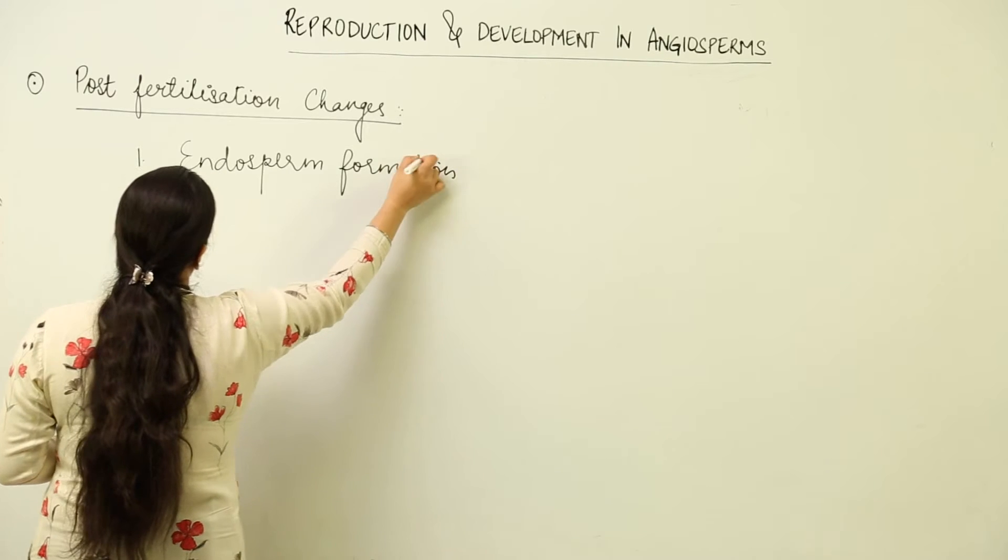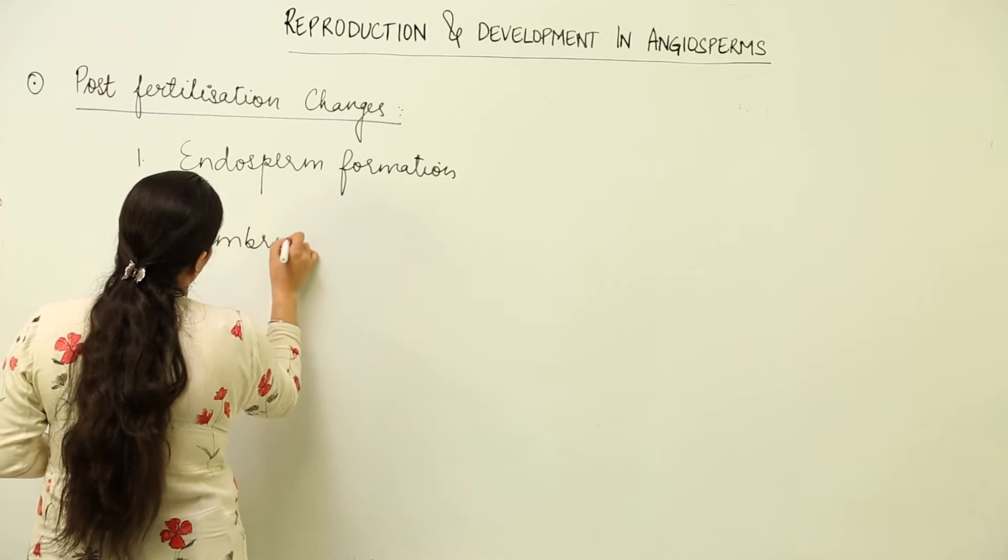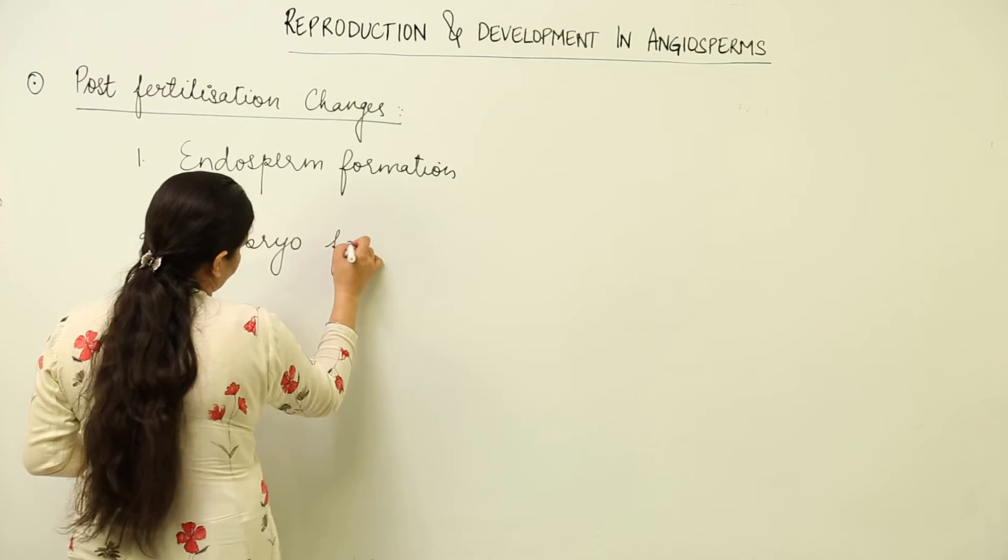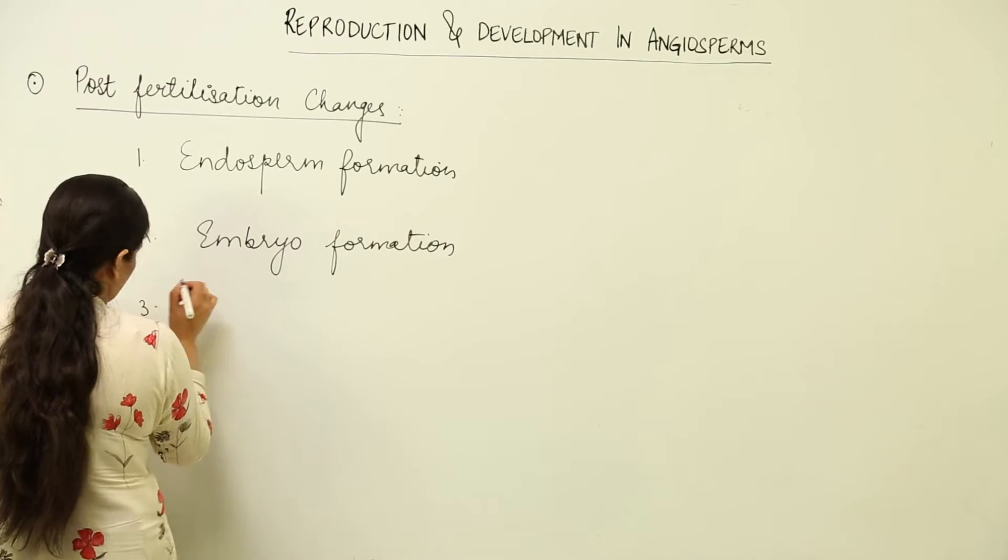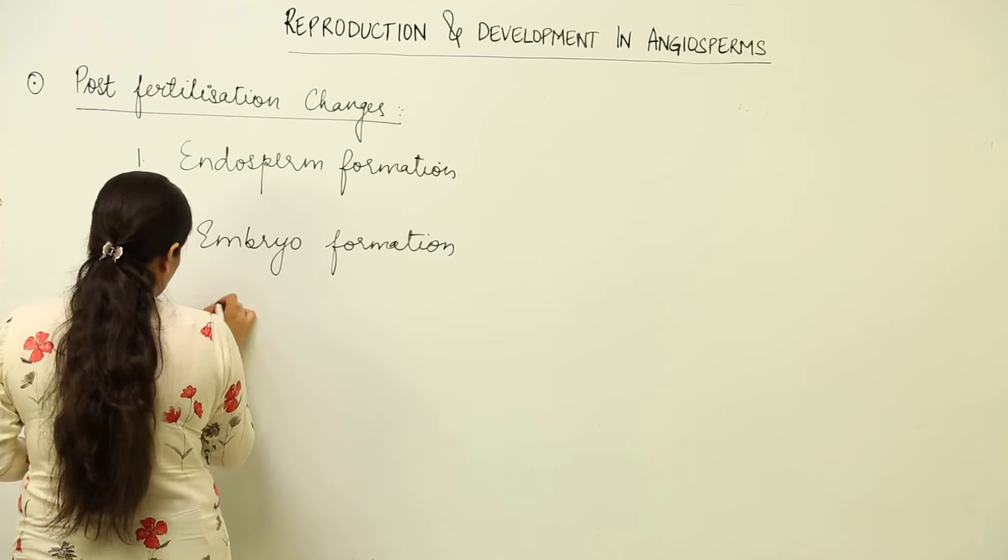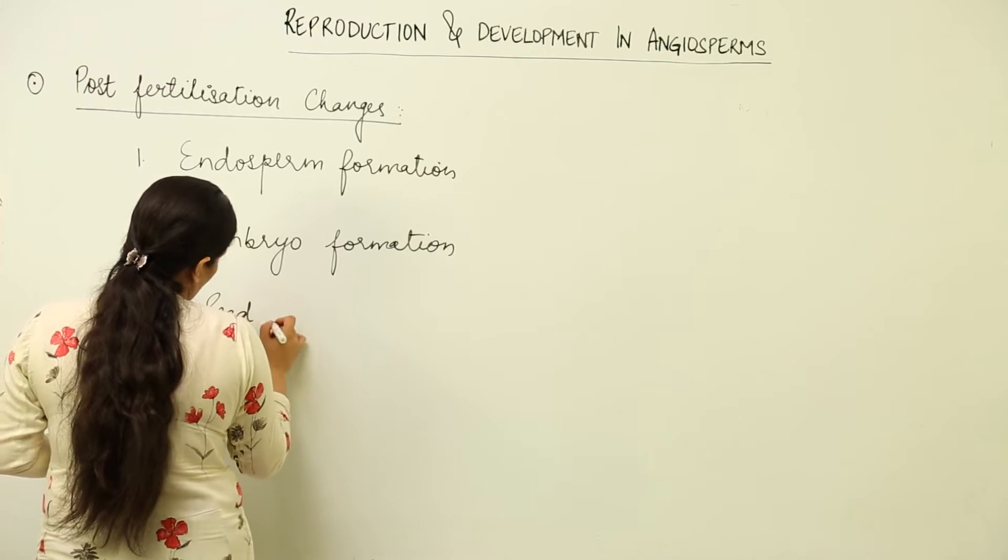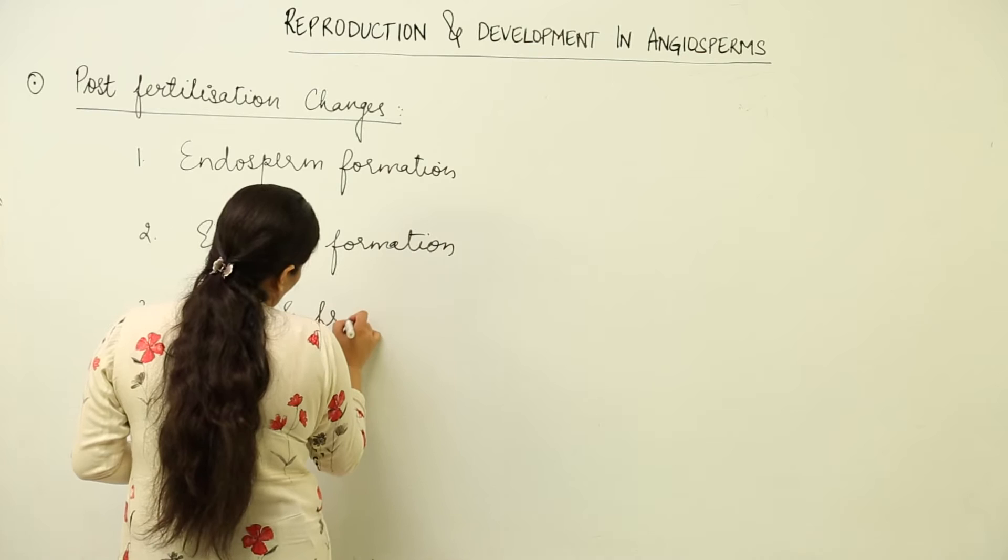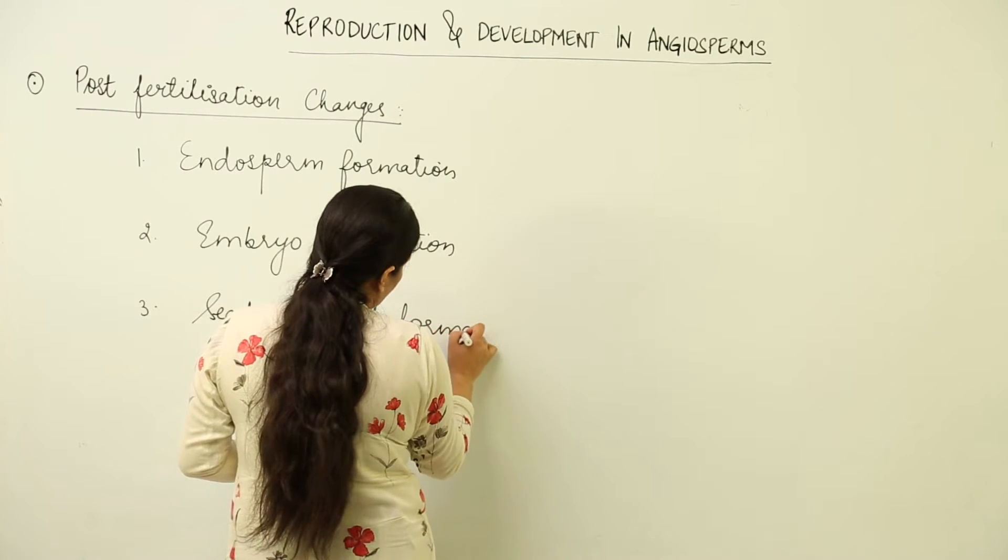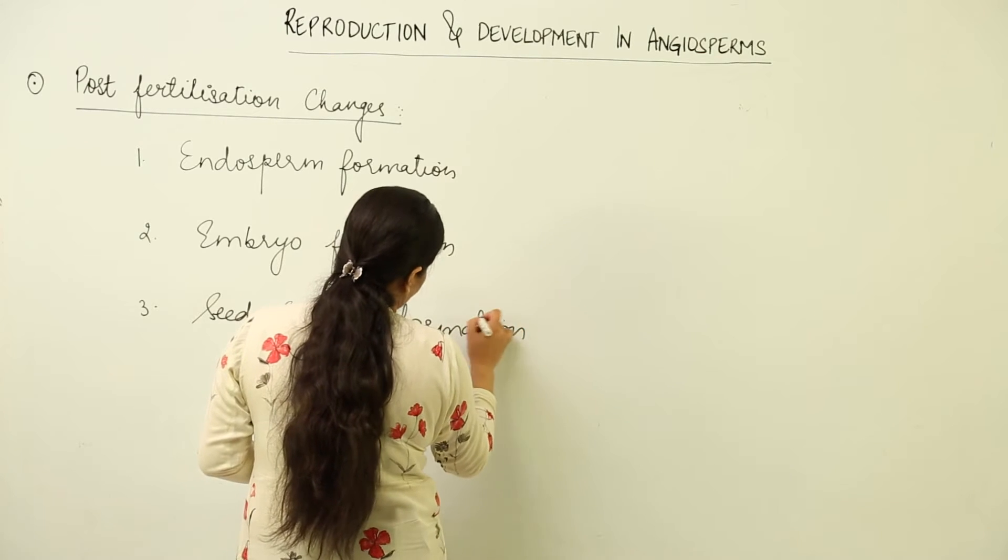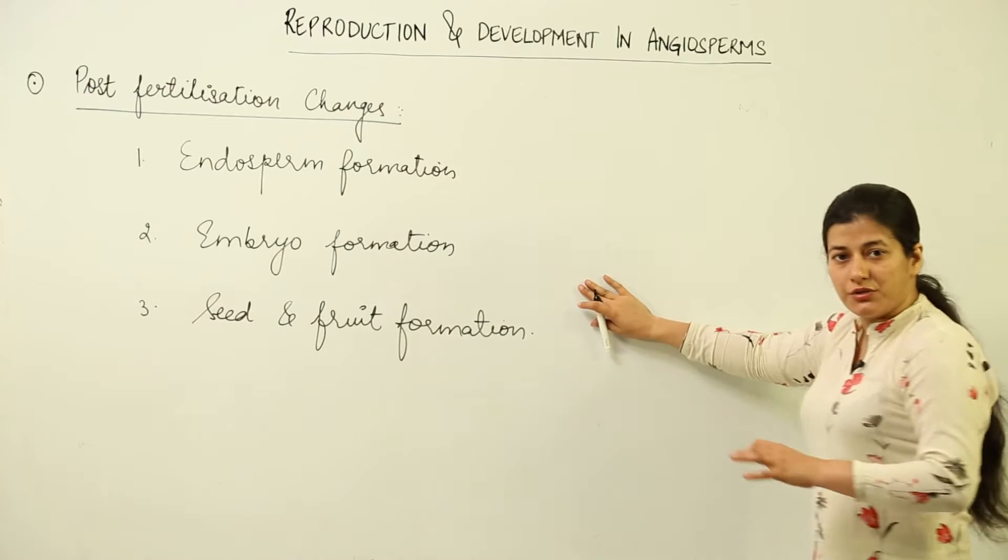This is followed by embryo formation, and this later on gets to the stage where seed and fruit formation takes place. So these are the three steps. We have a lesson dedicated to each one of them.